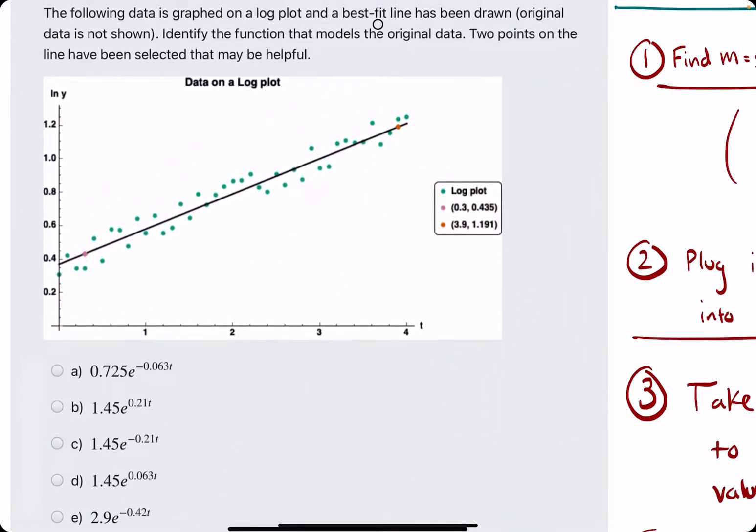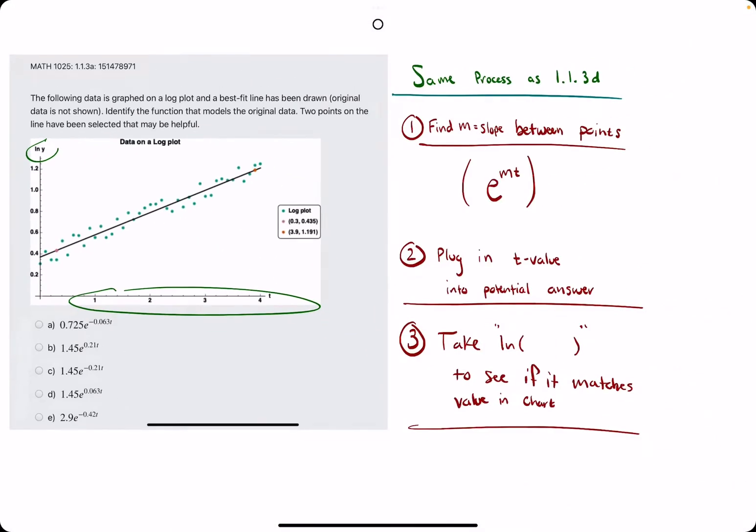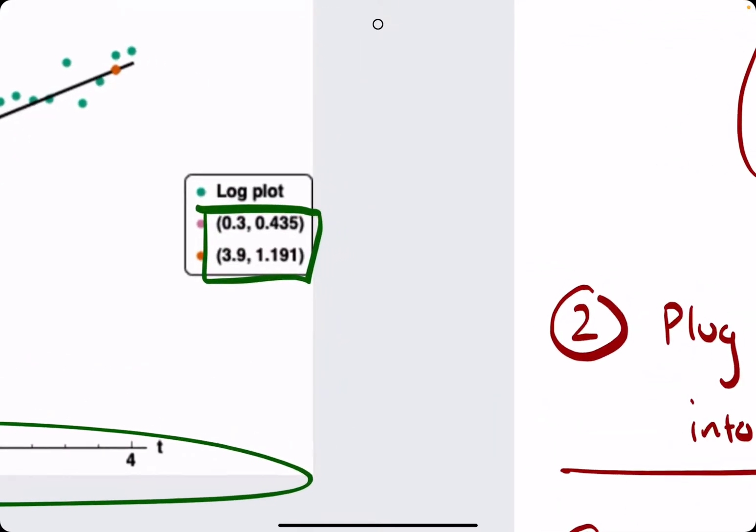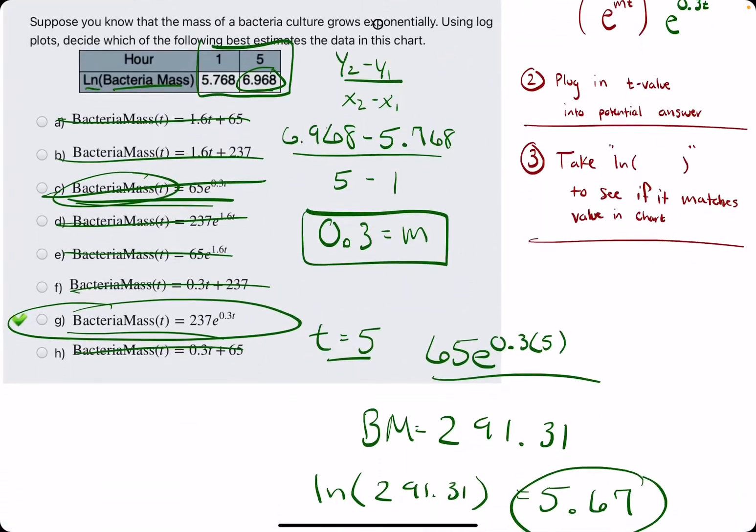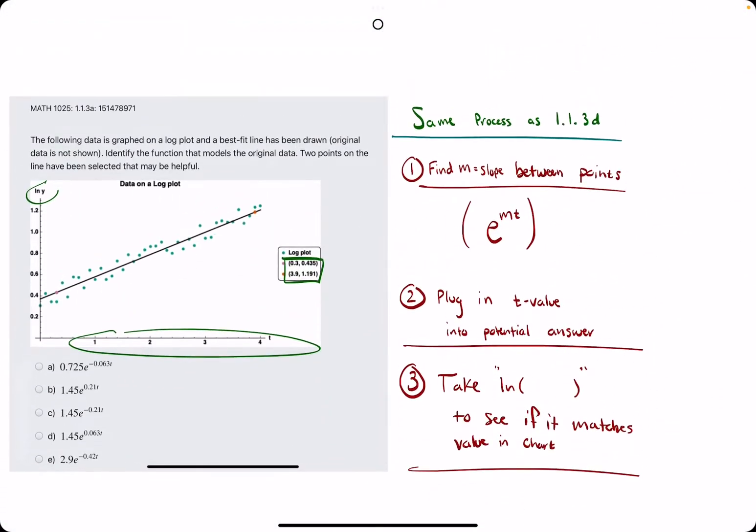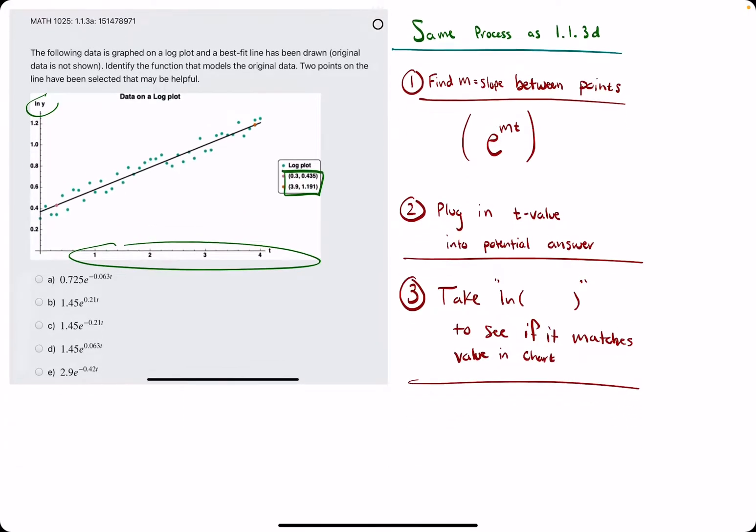Because in this problem, we are given t values and ln of y values, which they give us two points here, corresponding to the two points they gave us in the table version of this problem. The same process will apply.